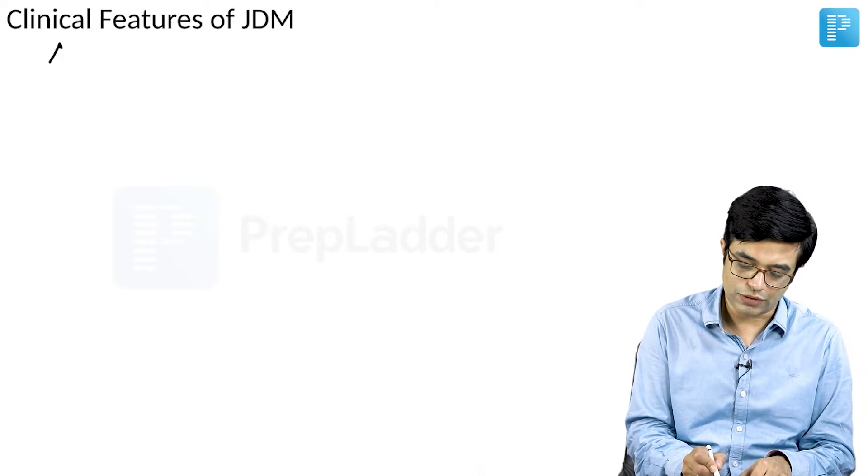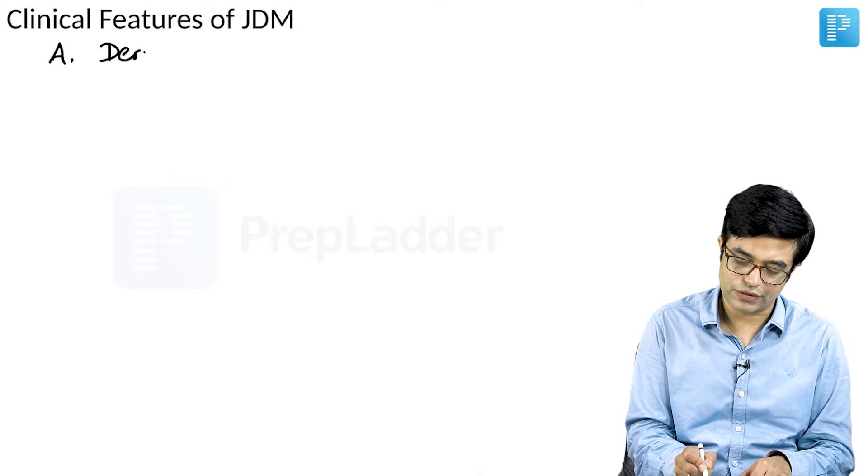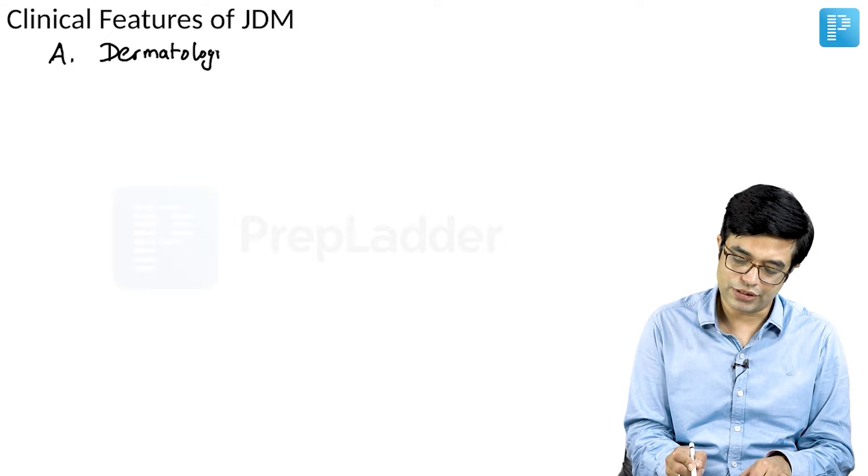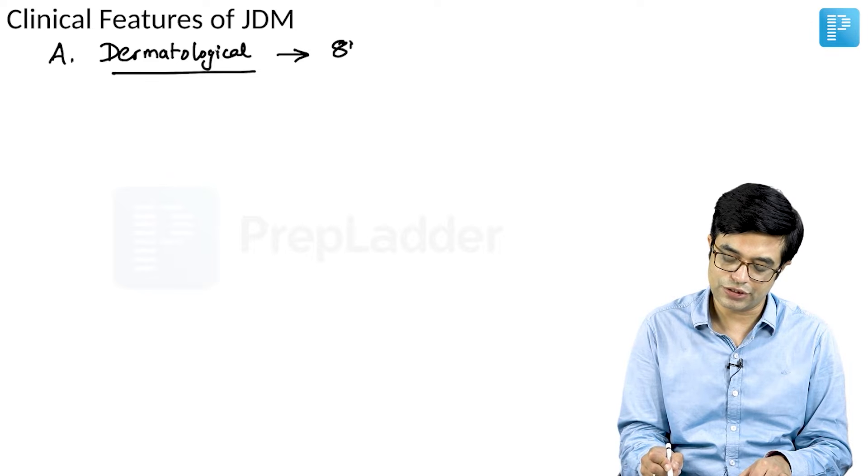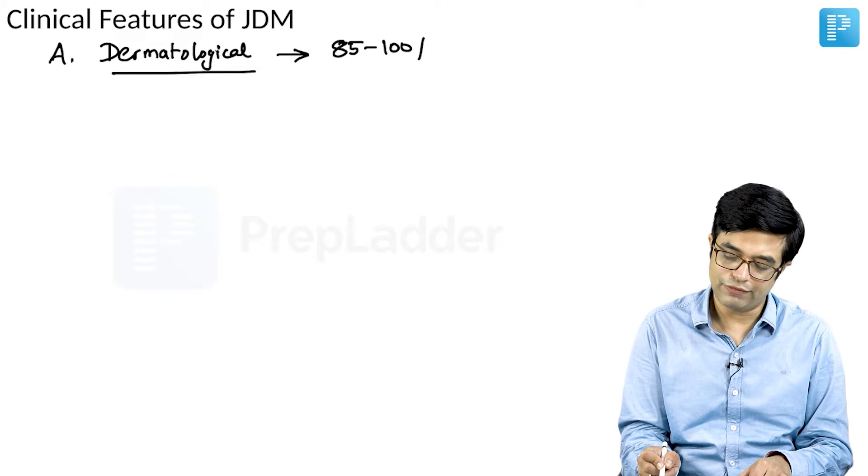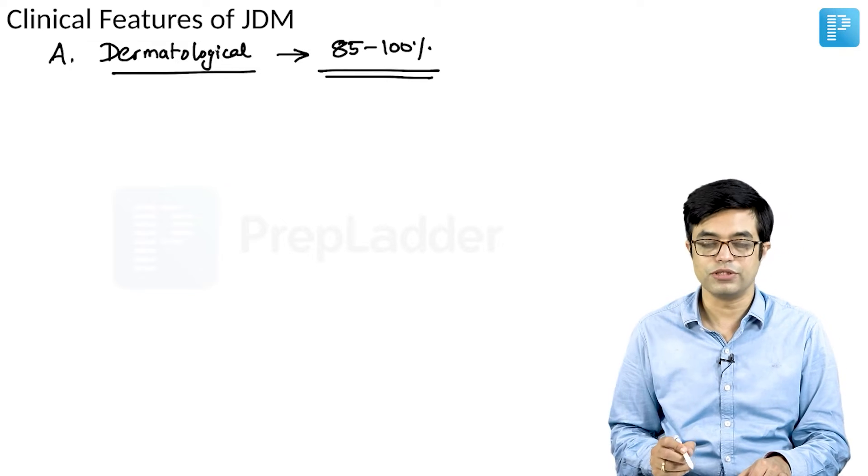First we will talk about the dermatological manifestations. There is a table given in Nelson which says dermatological manifestations are present in 85 to 100 percent of all individuals with JDM.